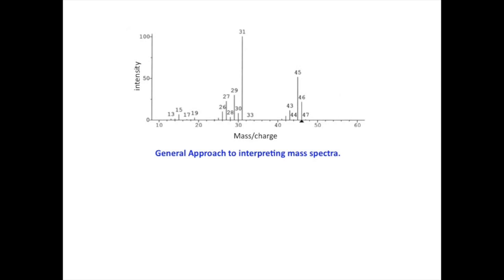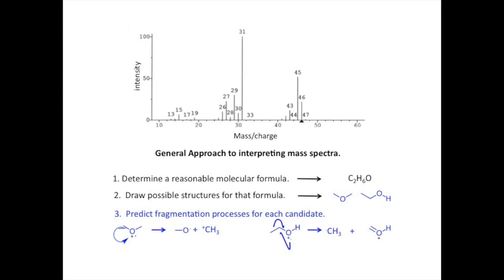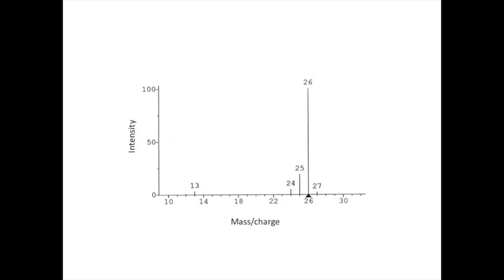Usually the main objective in interpreting a mass spectrum is determining molecular structure. Getting from the spectrum to a structure amounts to solving a puzzle. Puzzle solving is an art. People have their own strategies, but most chemists follow this general approach. First determine a reasonable molecular formula. Then draw possible structures for that formula. Then predict what fragmentation products will be produced for each candidate structure. Finally, look for evidence for the predicted fragments in order to decide which structure fits best. This lesson will concentrate on the first step. Let's take a look at a few simple mass spectra and attempt to interpret them.